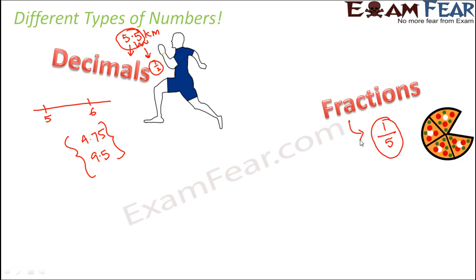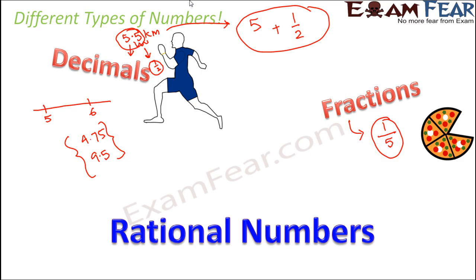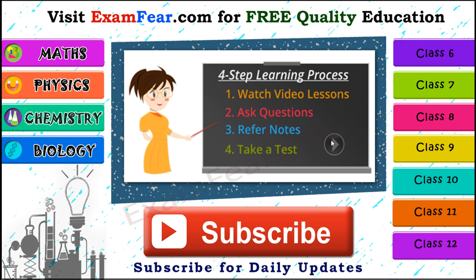Fractions and decimals are very closely related. A decimal is another way of representing numbers that have both a whole number part and a fractional part. For example, 5.5 has two parts: the whole number 5 and the fractional part 1/2. Adding them gives 5.5, which is a more convenient way of representing such numbers. In this lesson, we are going to talk about yet another type of number — rational numbers.